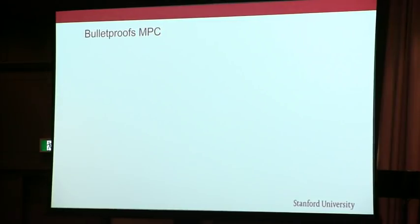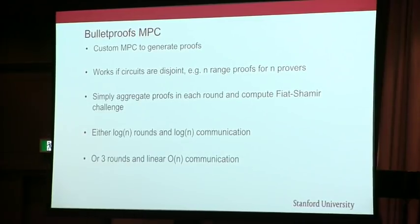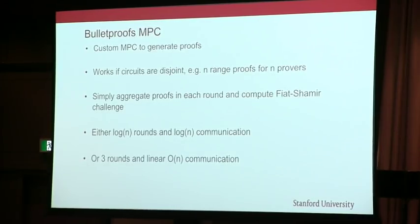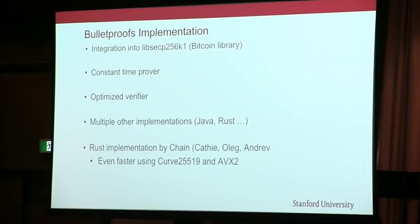We developed an MPC — multi-party computation — specifically for Bulletproofs. There are general results for this, but we developed a very efficient version that allows multiple parties to create one proof together. This works in a logarithmic number of rounds with very little communication, or in three rounds with more communication. If the parties can find each other — in Bitcoin this would be called a CoinJoin — then they can create one small proof for all of them together, which closes the size gap between a SNARK and a Bulletproof.